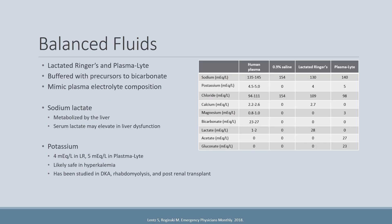When we talk about balanced fluids, the two used most widely in practice with the most evidence are lactated Ringer's and Plasmalyte. They're referred to as balanced or buffered fluids because they are buffered with precursors to bicarbonate — those precursors being sodium lactate and acetate. They more closely mimic plasma electrolyte composition, and I have included a graphic here indicating a range of normal electrolyte composition in human plasma compared to normal saline, lactated Ringer's, and Plasmalyte.